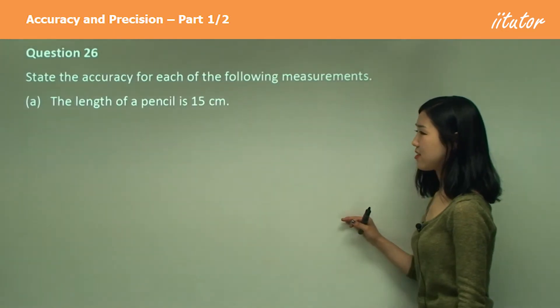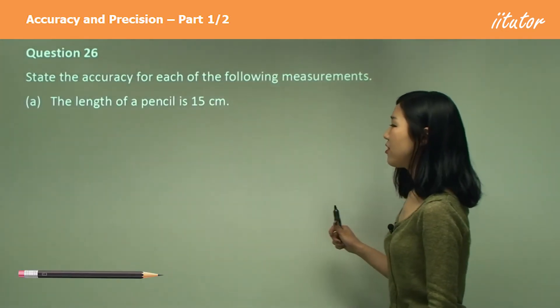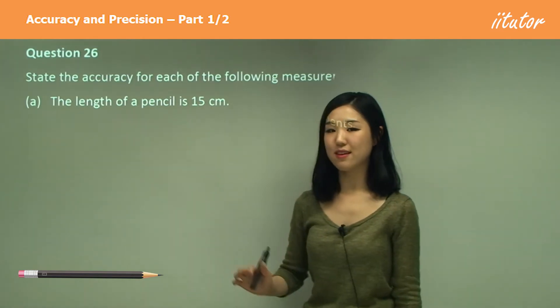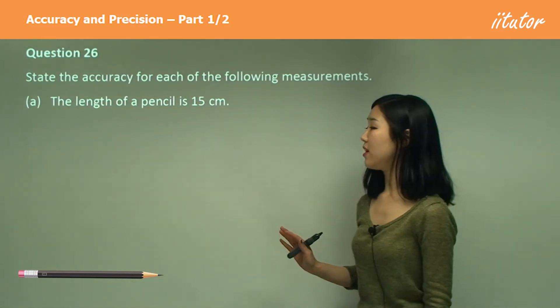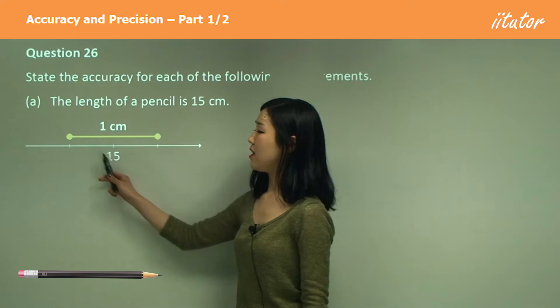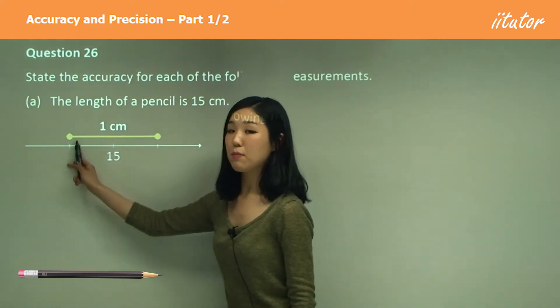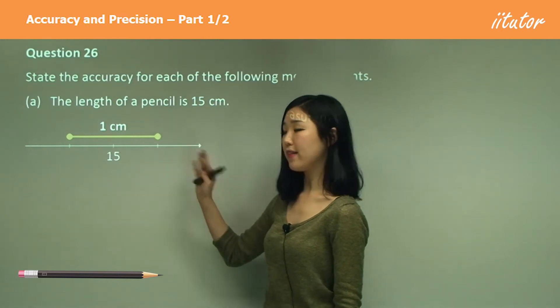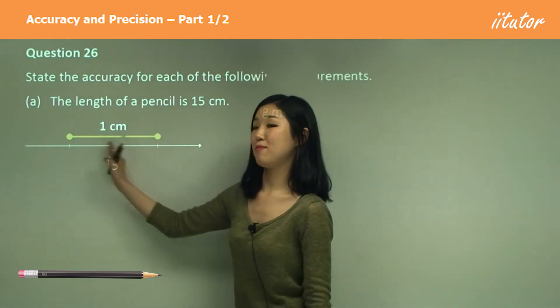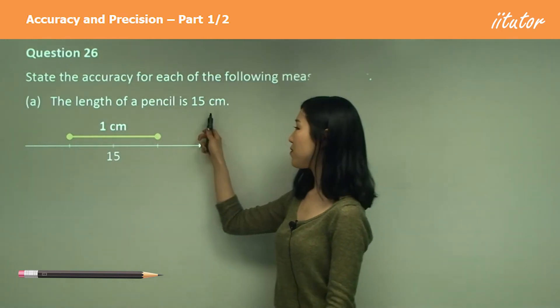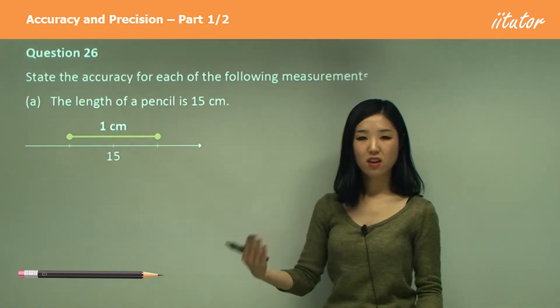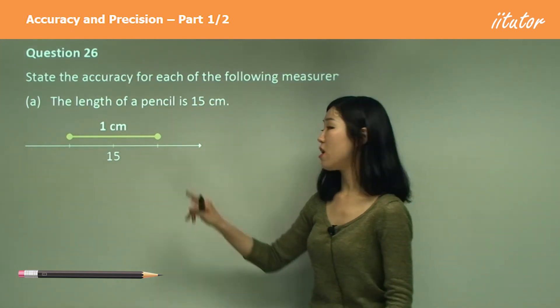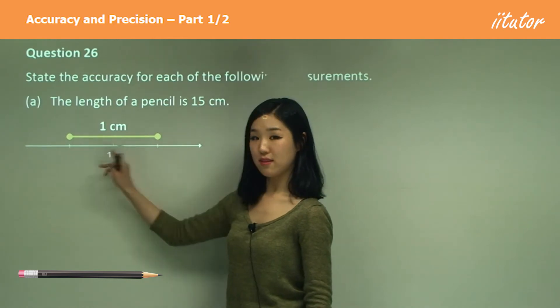Question 26 says state the accuracy for each of the following measurements. So the length of the pencil was 15 centimeters. All we need to do is, if that's 15, from the first limit to the next limit, from the lower limit to the higher limit, it's going to be a one centimeter gap. Because 15 centimeters is in the nearest centimeter, isn't it? So we put it to the nearest one centimeter.